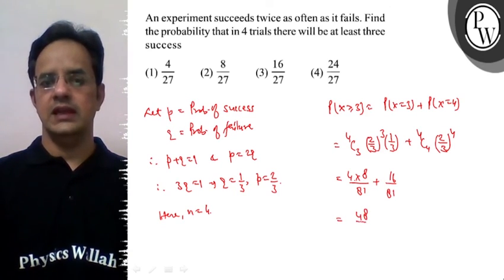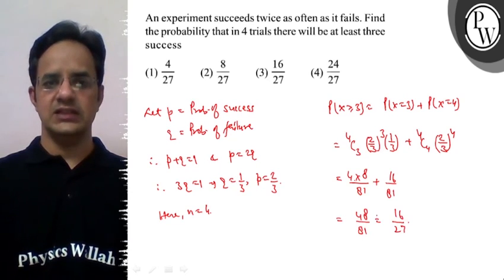So it is 48 divided by 81, or we have 16 upon 27. So the final answer to this problem is option 3: 16 upon 27. Hope you understood it. Bye, best of luck.